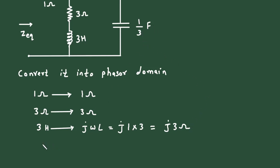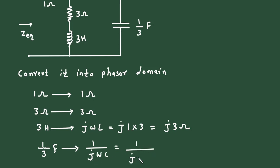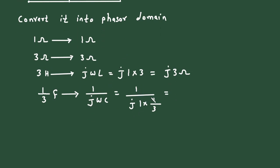The 1/3 farad capacitor will change to 1 upon j omega C. With omega equal to 1 and capacitance equal to 1/3, this becomes 1 upon j times 1/3. Since 1 upon j equals minus j, and 1 upon 1/3 equals 3, this gives minus j3 ohm.